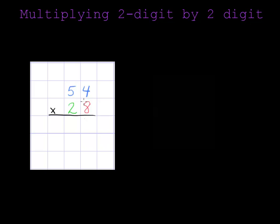That's because when we multiply a number by a two-digit number, we have to break the problem up into two easier problems.